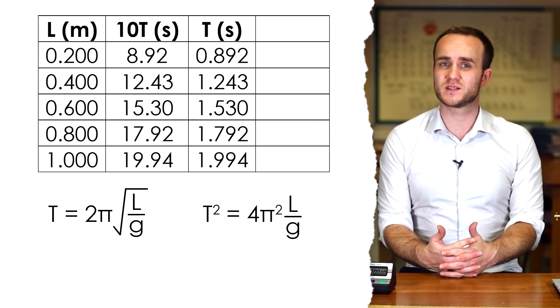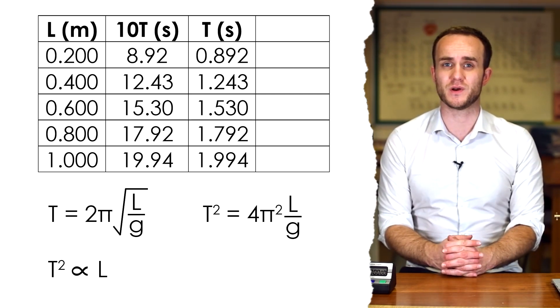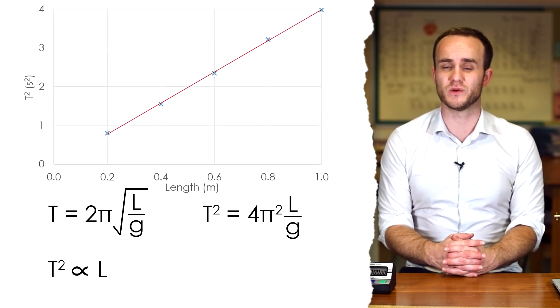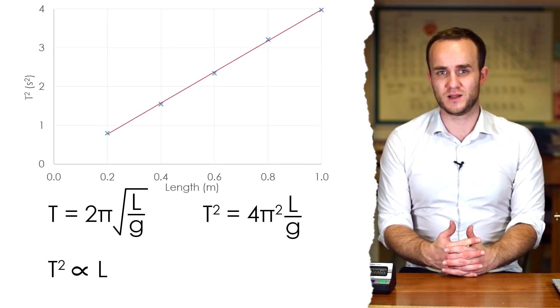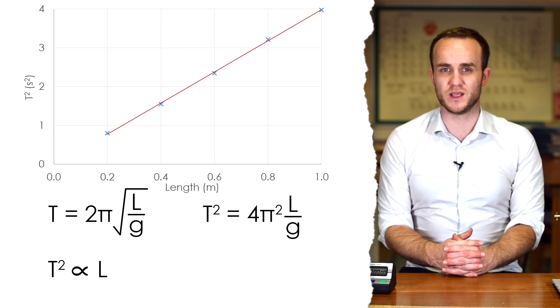Squaring the whole equation though, we can see that t² is proportional to l. So that's what we're going to draw on our graph: t² on the y-axis and l, length of the piece of string, on the x-axis.